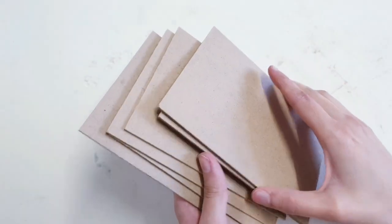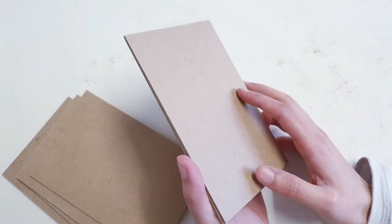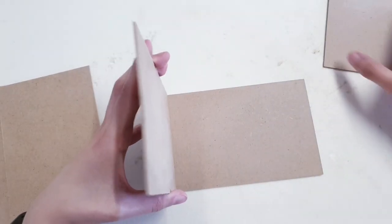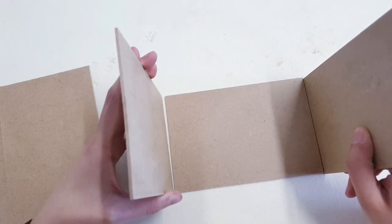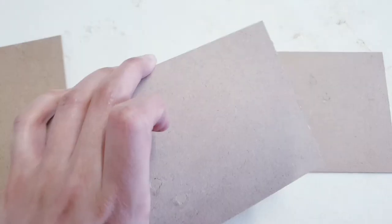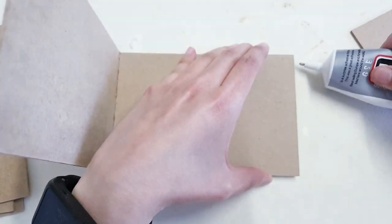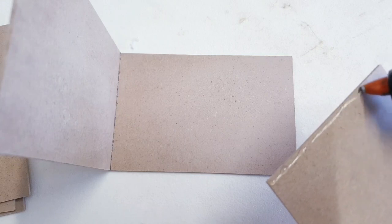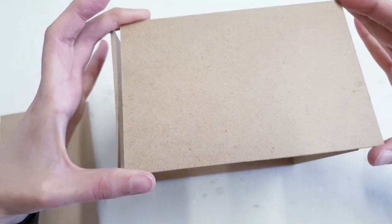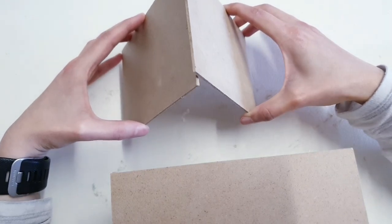Now once you've done that, the next step is to glue all of these together. So you're going to need a combination of E6000 and hot glue. You're going to place one on the bottom, and then we're going to have two stick together on either side like this. Then you're going to take one more and stick that on the top, and then you're going to create a little roof by sticking these two like this.